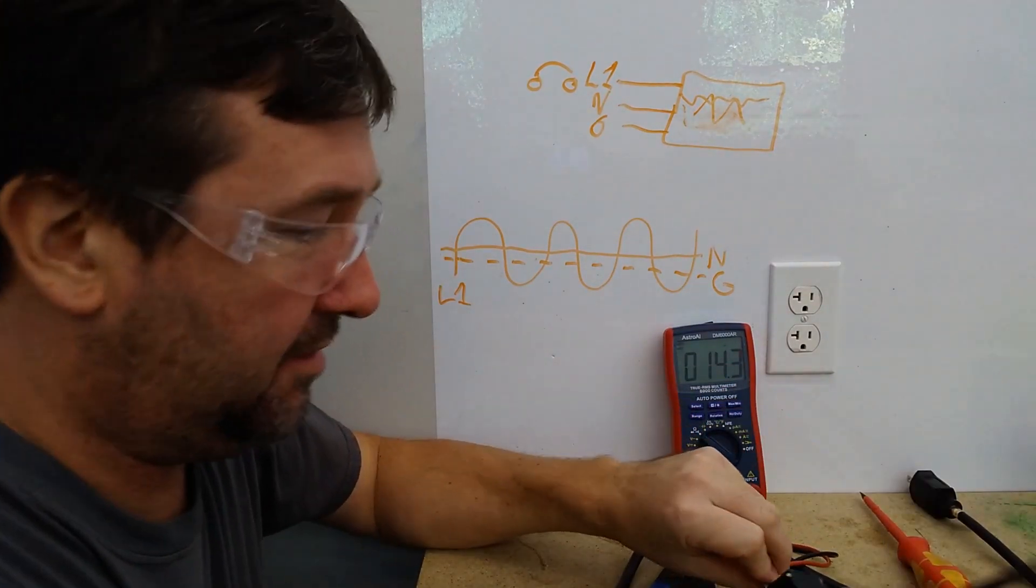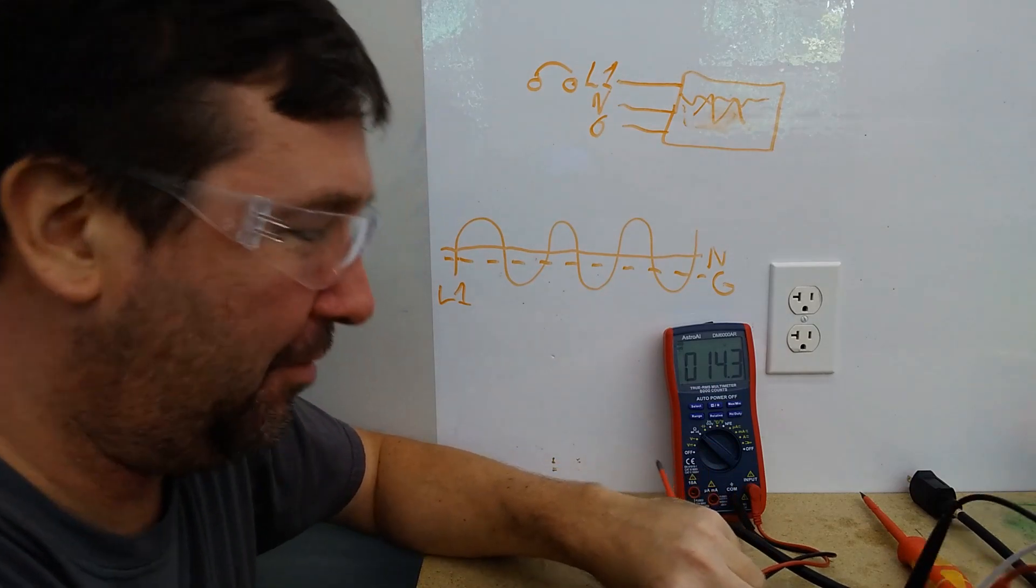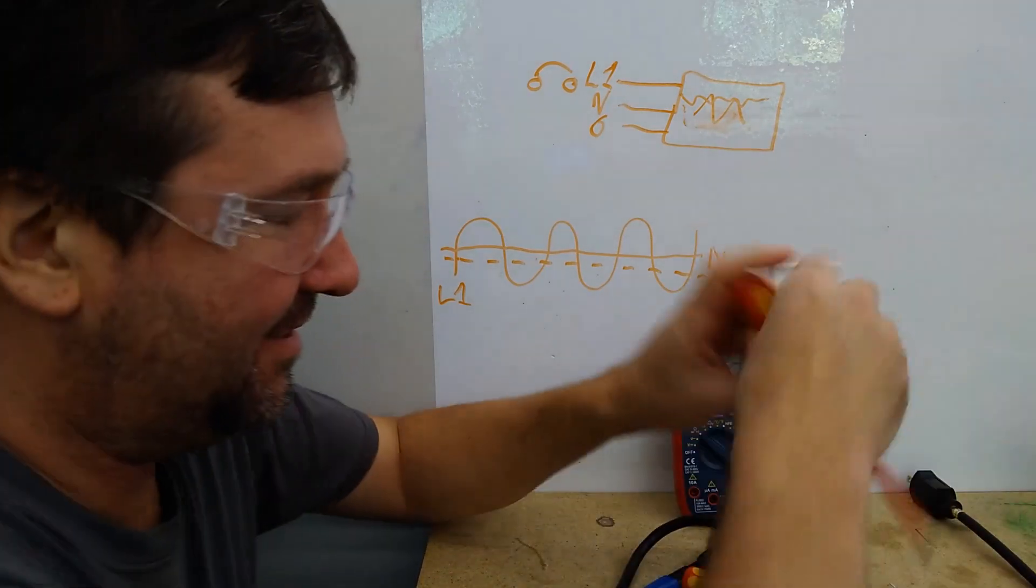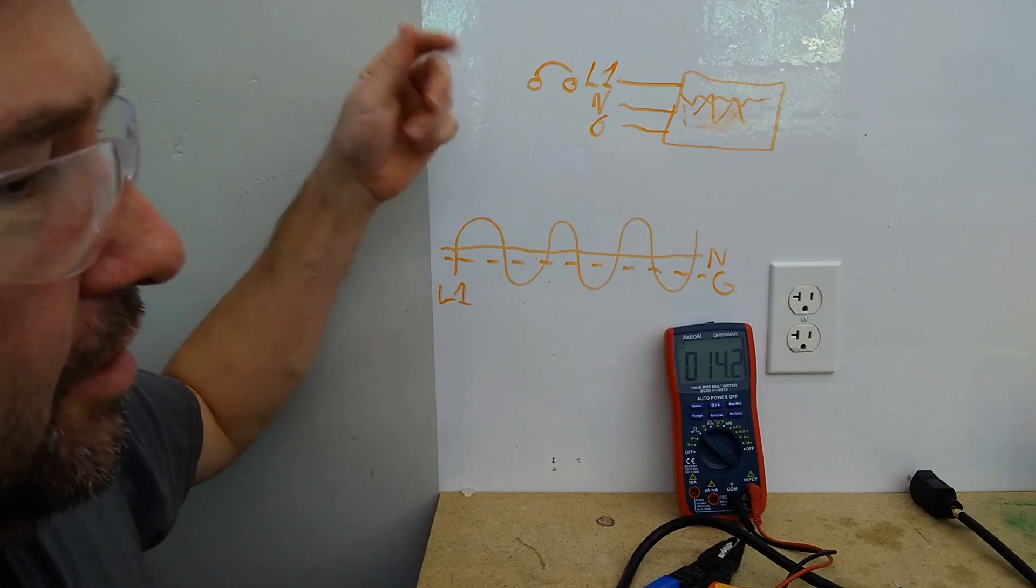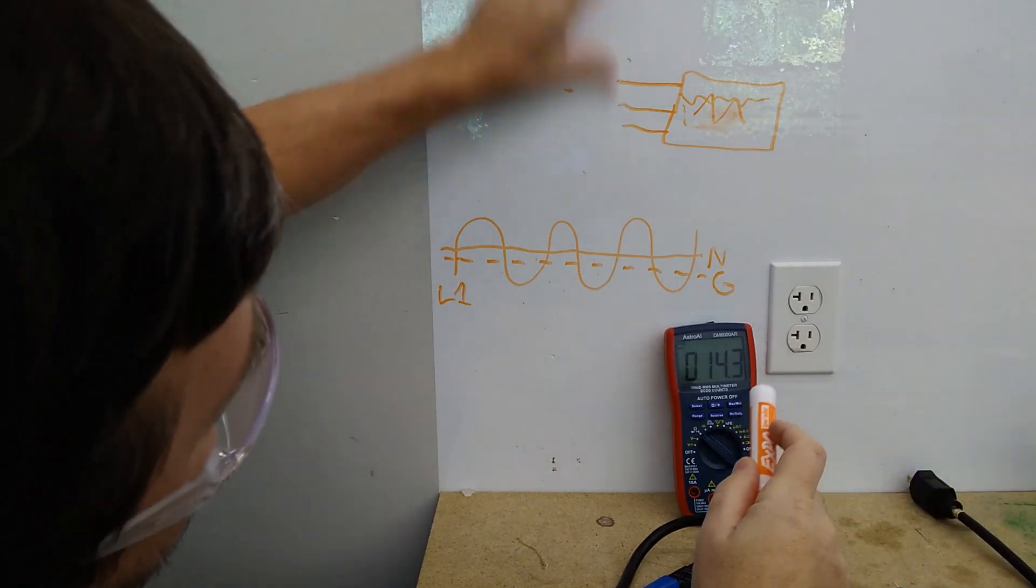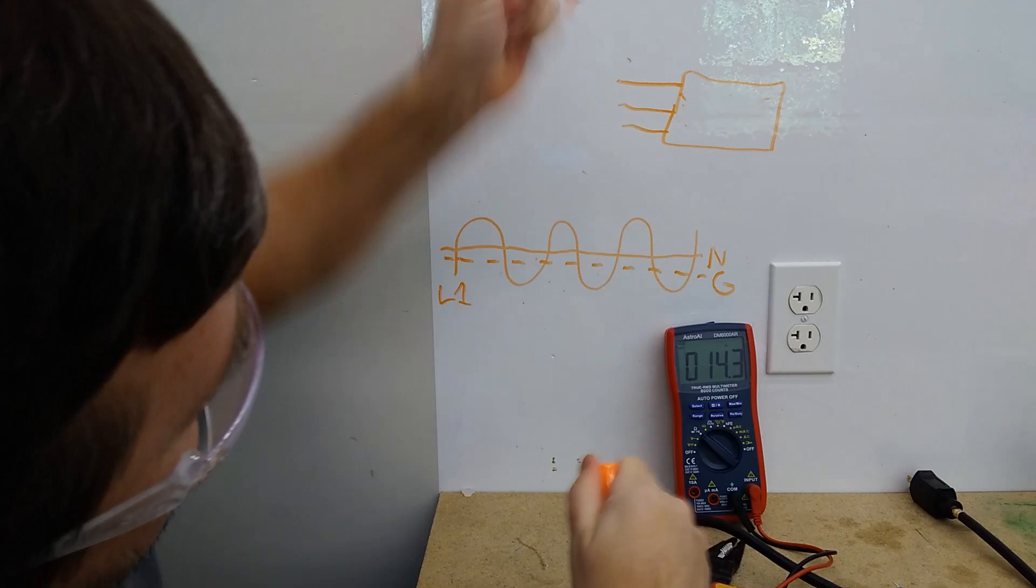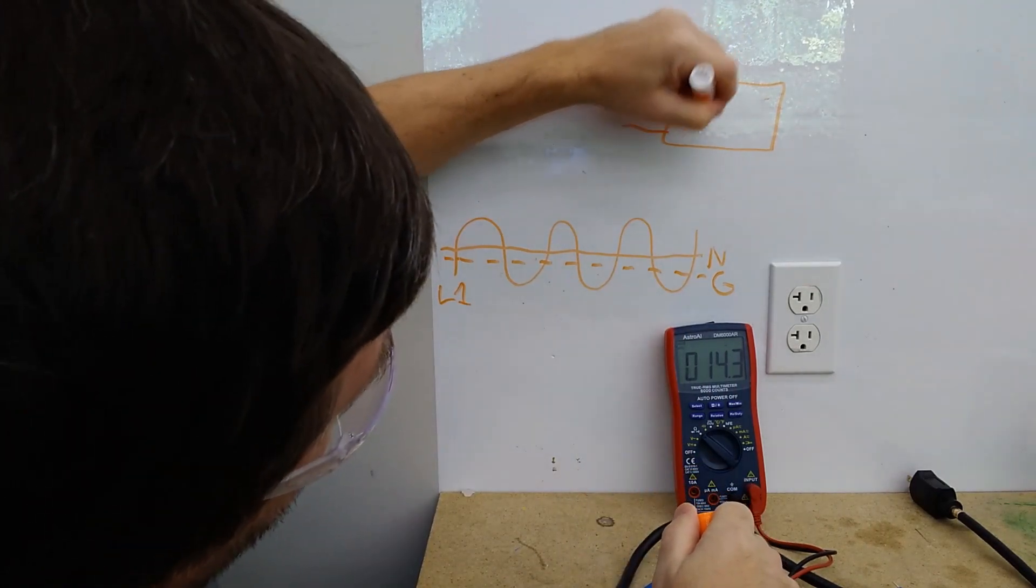So that's how a ground fault circuit interrupter or residual current device works. Now, since we're here, let's go ahead and take this apart. I don't know that we'll be able to actually see anything inside of here. It's probably on the circuit board. But in the end, let's see, we'll just turn this into our receptacle here.